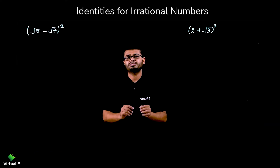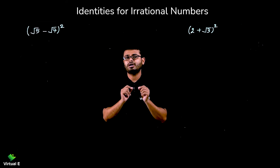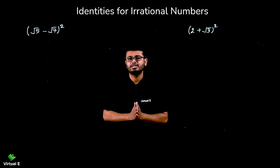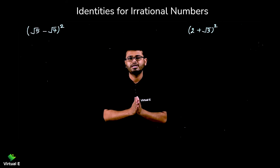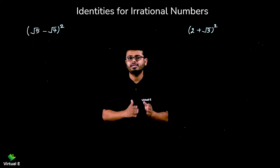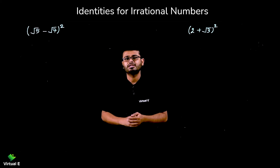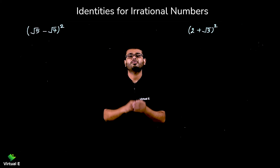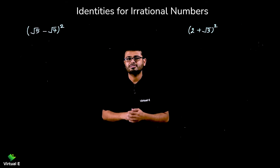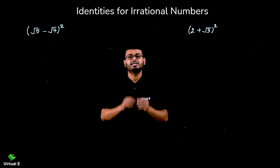Now let's discuss questions related to algebraic identities. We know that (a + b)² = a² + 2ab + b², (a - b)² = a² - 2ab + b², and the third identity as well. We are going to apply these identities to irrational numbers and solve the questions.